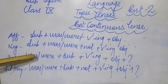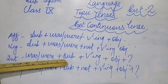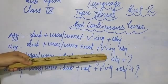Interrogative sentence, again same, was, were will come first, subject, first form with ing, object and question mark.